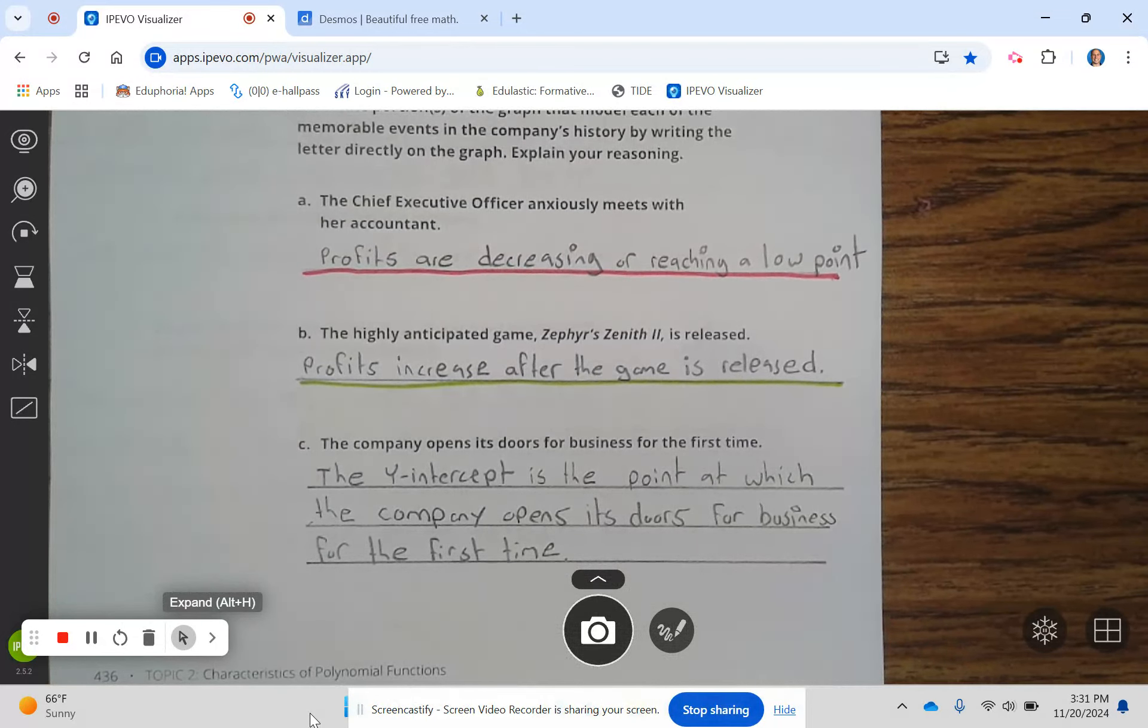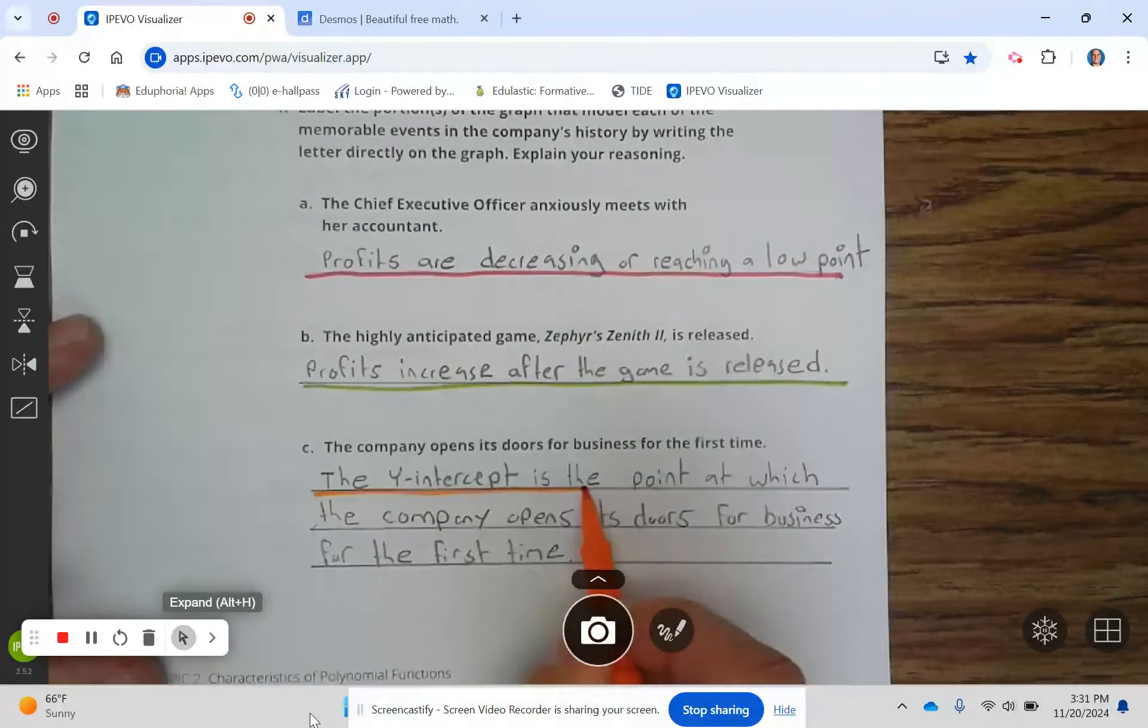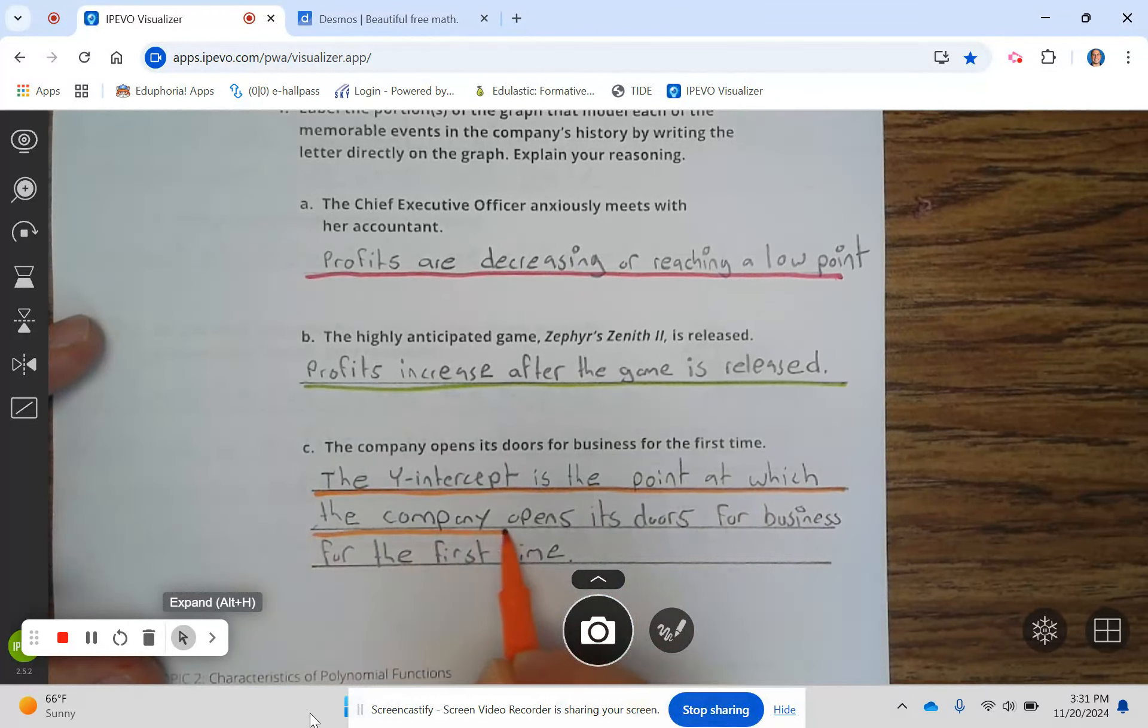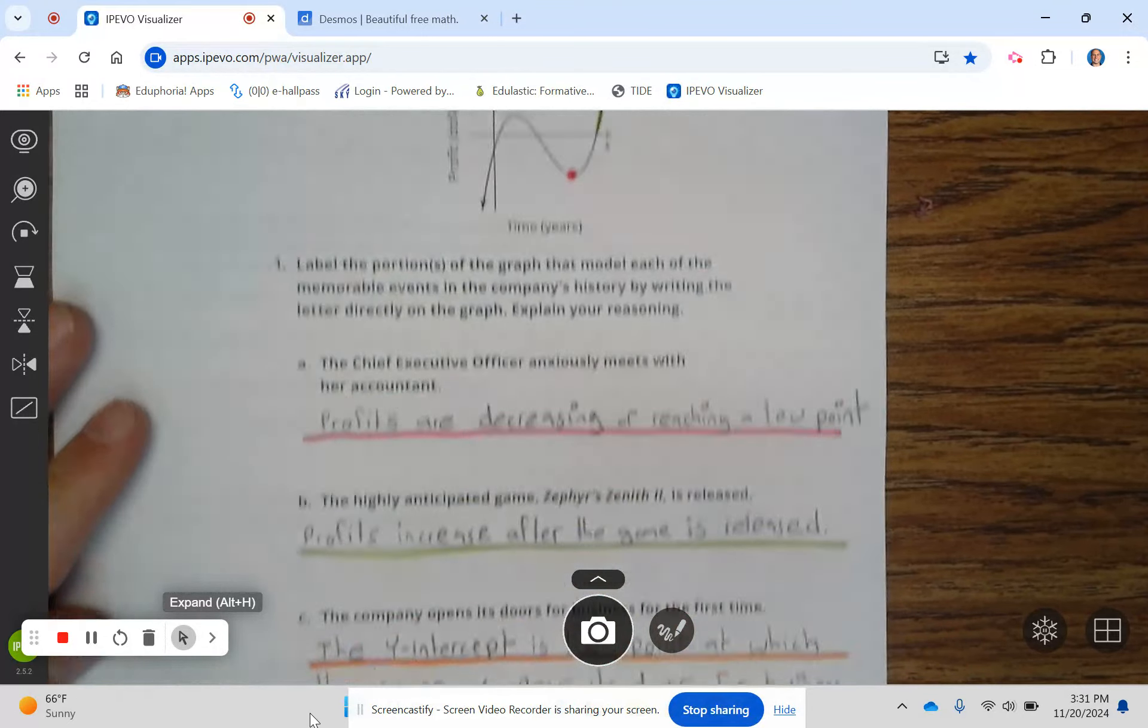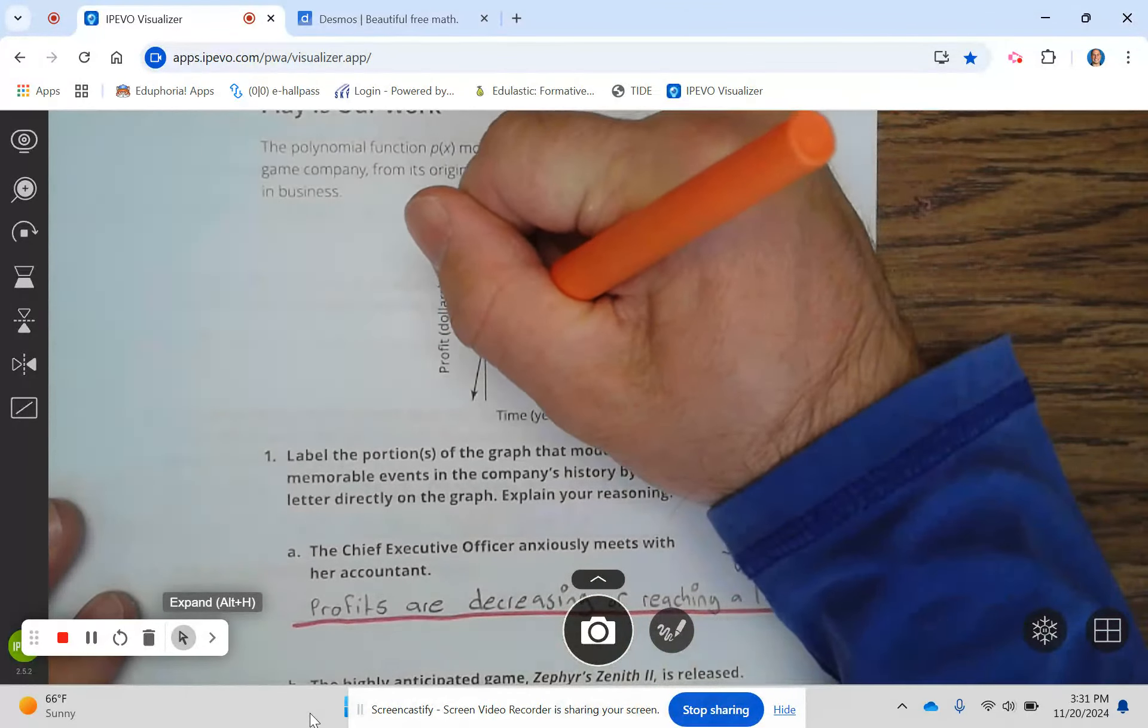The company opens its doors for business for the first time. The y-intercept is the point at which the company opens its doors for the first time, which we're going to label. So that point is right here.